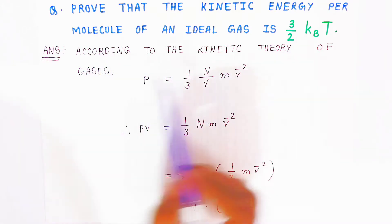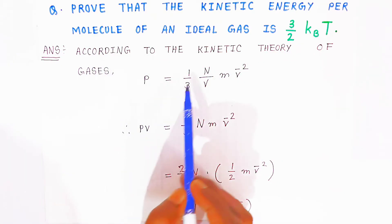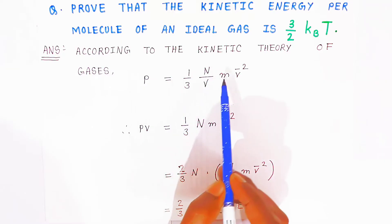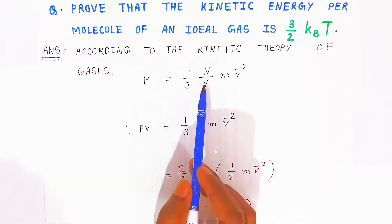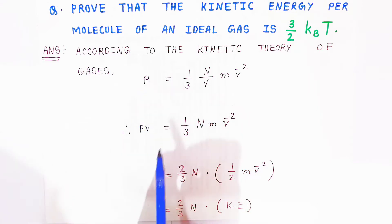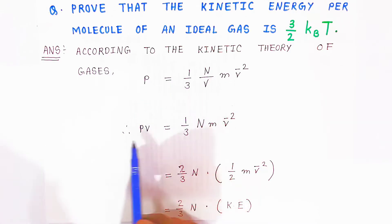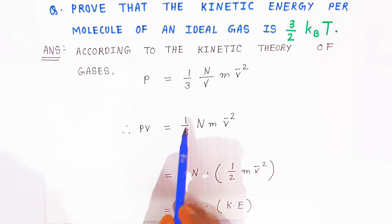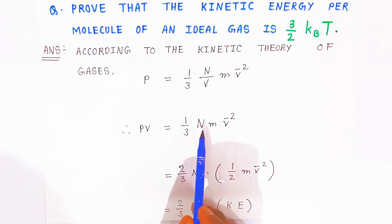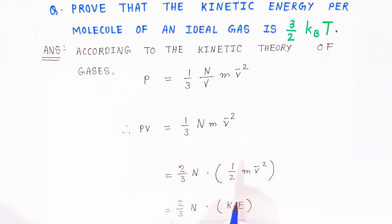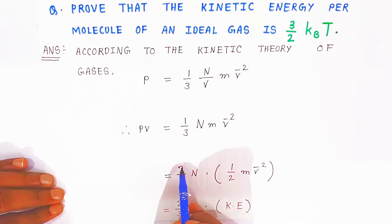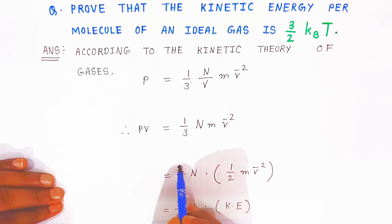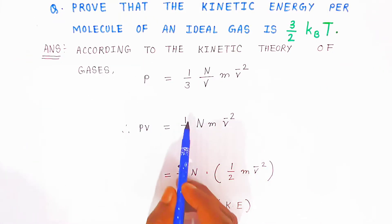According to the kinetic theory of gases, pressure equals (1/3)(N/V)·m·v̄². When volume comes to this side, it becomes PV = (1/3)·N·m·v̄². Now you have to introduce the factor of one-half: write 2 here so you can incorporate (1/2)mv̄².